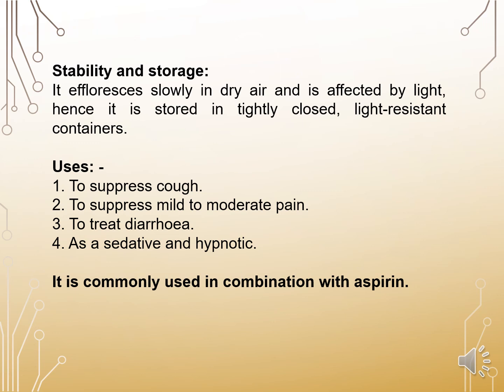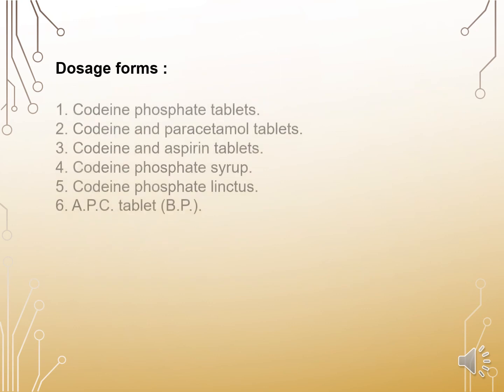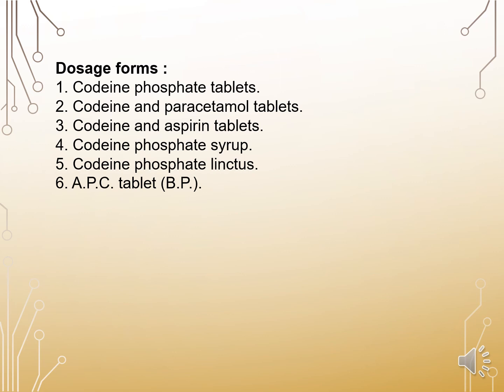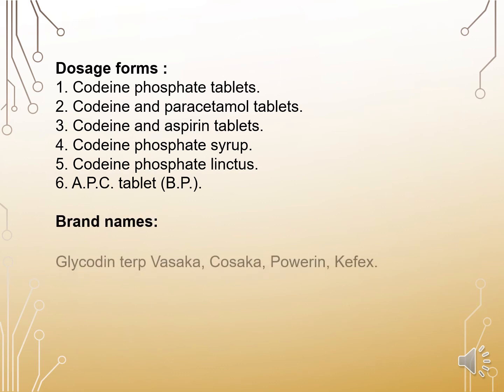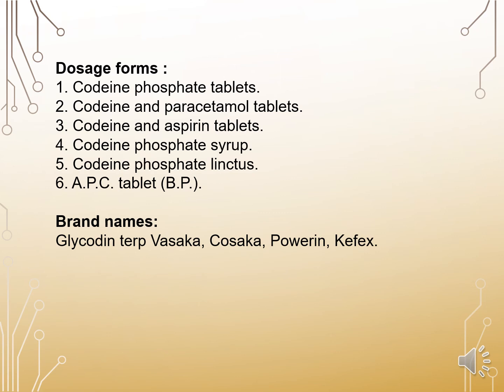Codeine is normally given in combination with aspirin. Dosage forms include Codeine Phosphate Tablet, Codeine and Paracetamol Tablet, Codeine and Aspirin Tablet, Codeine Phosphate Syrup, Codeine Phosphate Linctus, and Codeine and APC Tablet BP. Brand names are Glycodine, Terp, Vasaka, Kosaka, Powering, and Kafex.